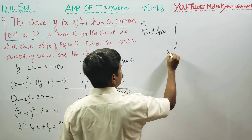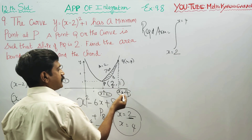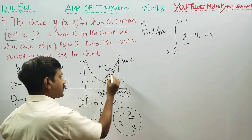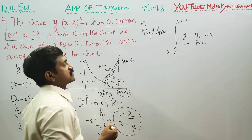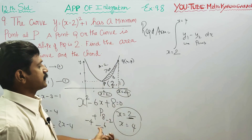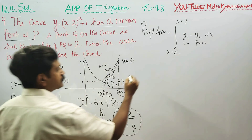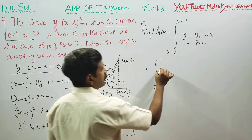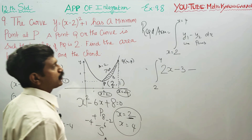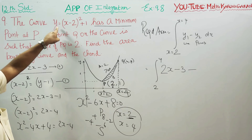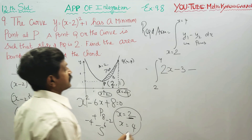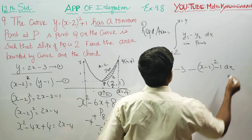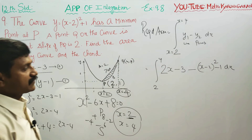Since x equals 2 corresponds to point P, x equals 4 corresponds to point Q. The required area is found by integrating the top curve minus the bottom curve from x equals 2 to x equals 4. The top is the line y equals 2x minus 3 and the bottom is the parabola y equals x minus 2 whole square plus 1. Applying upper limit minus lower limit gives the area.